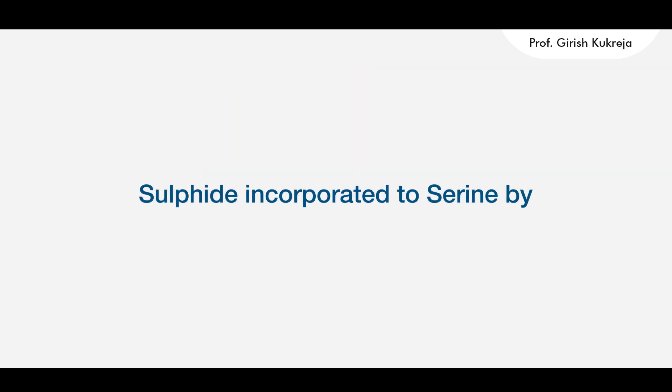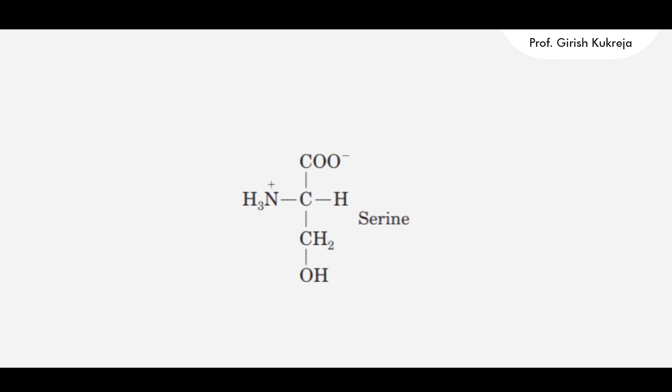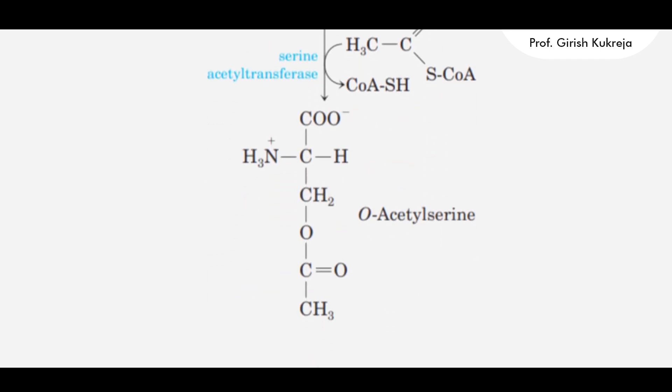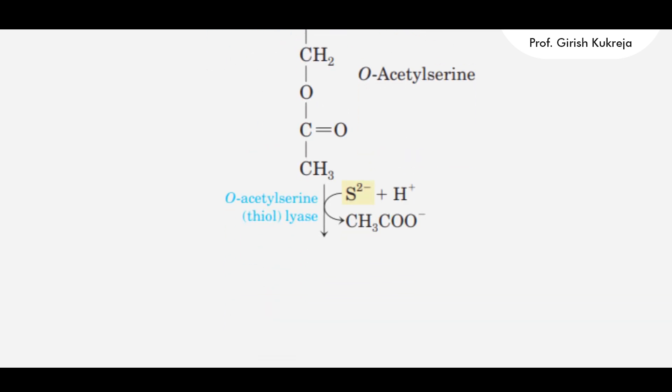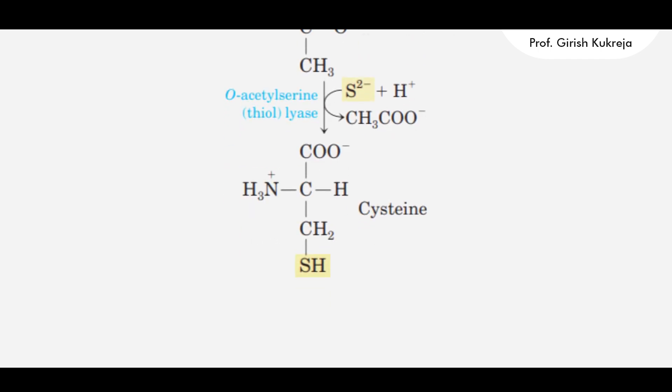The sulphide is then incorporated into serine by two steps where serine is first acted upon by serine acetyl transferase to form O-acetyl-serine. This O-acetyl-serine incorporates the reduced sulphide to form cysteine.